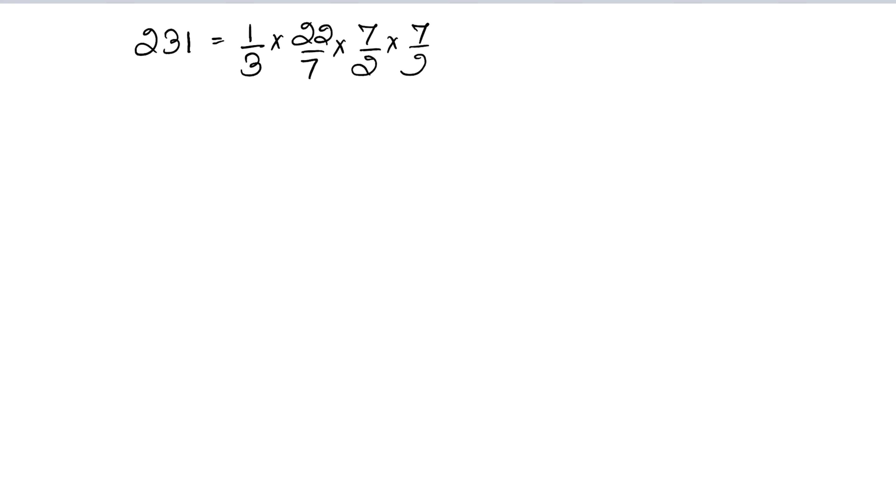7 upon 2 into h plus 2 upon 3 π, 22 upon 7, r cube r is 7 upon 2 into 7 upon 2, right. So now let's solve it.